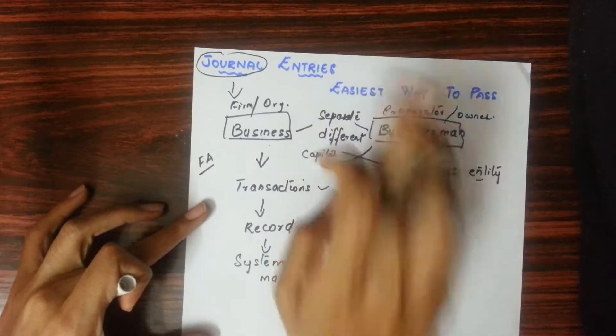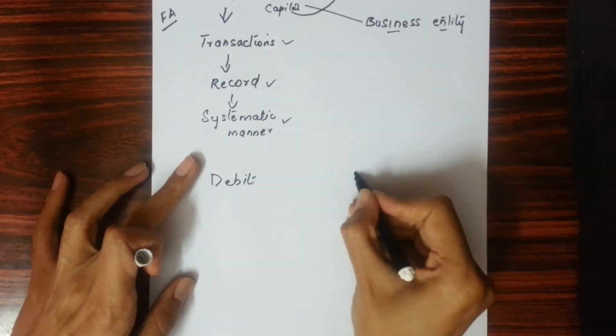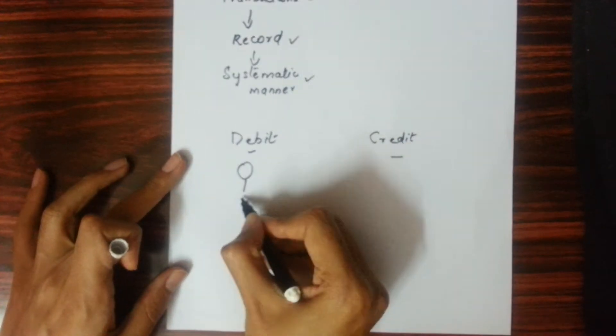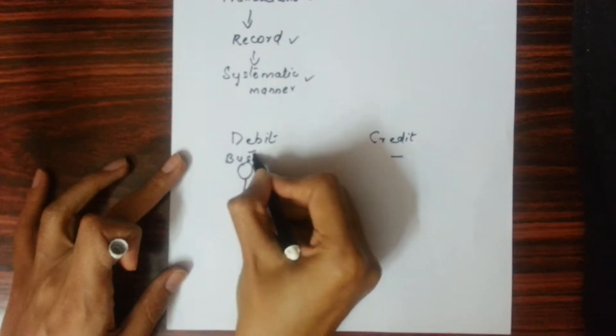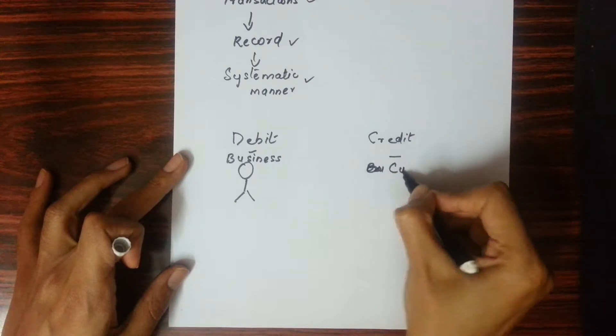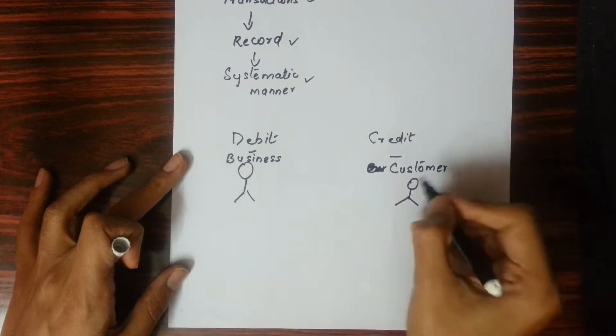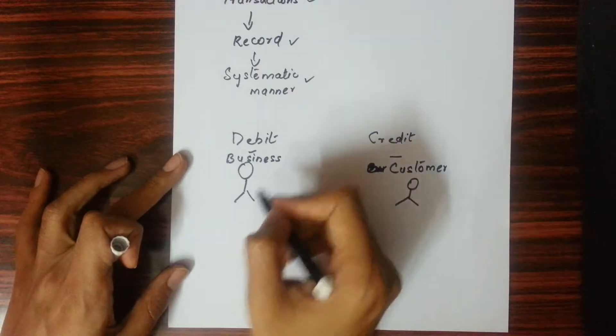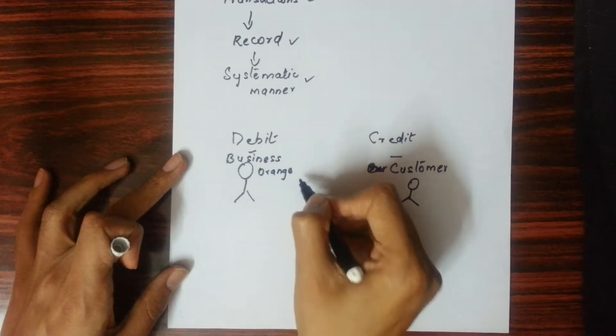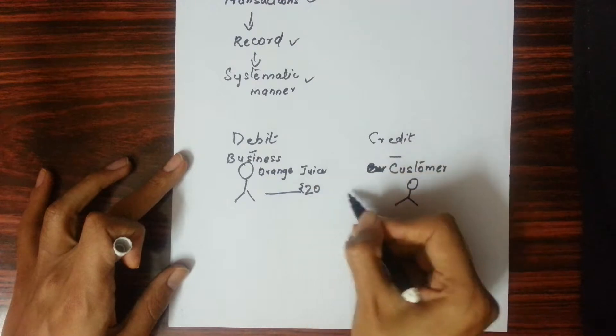When we do journal entries, we have to keep two things in mind. One is debit, the other is credit. What is credit, what is debit? This is business, and this is your business's customer. Whenever a customer buys something from you - suppose you make orange juice in your business. Whatever product you have, that is orange juice. So the customer buys an orange juice bottle from you for 20 rupees. This is the orange juice bottle that you buy.